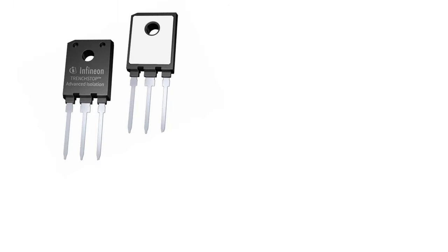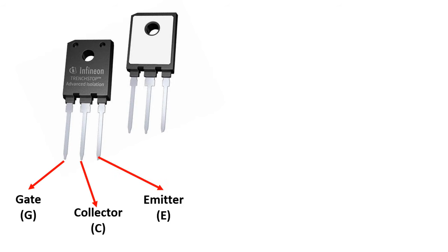IGBTs have three pins. One of them is the gate, the other is the collector, and the last one is the emitter. The abbreviations G, C, and E are used for these.